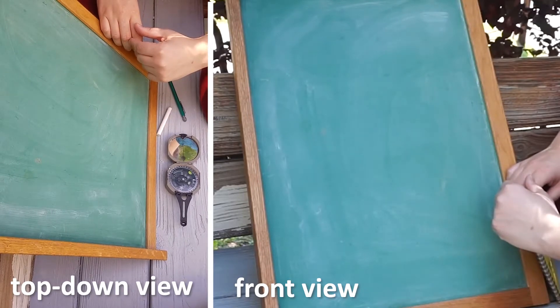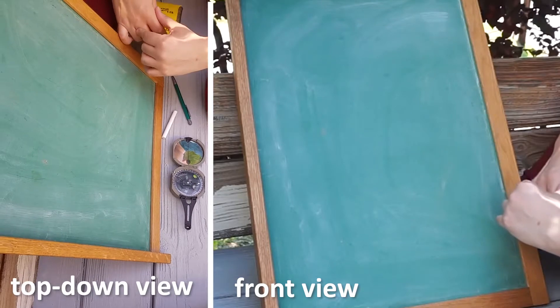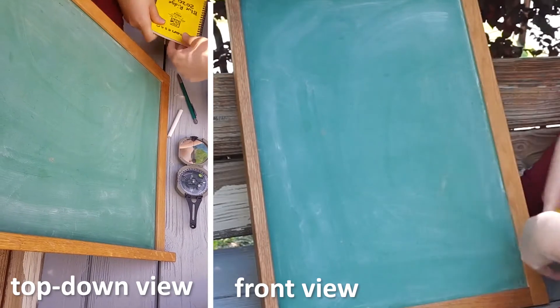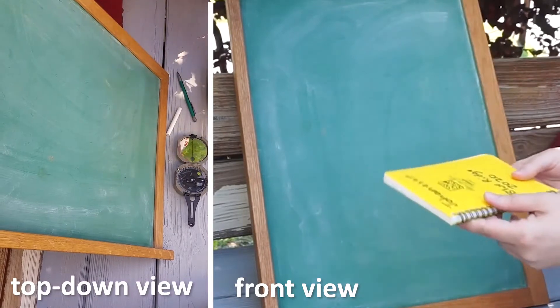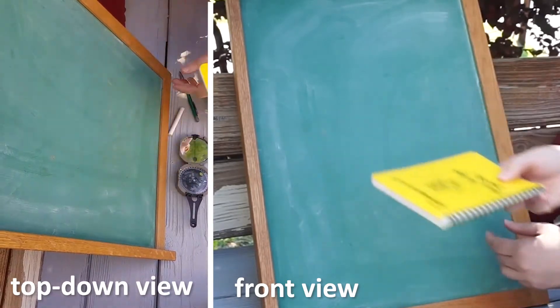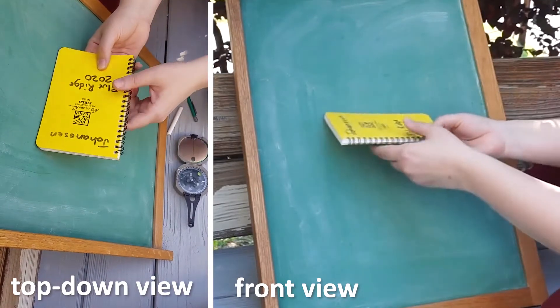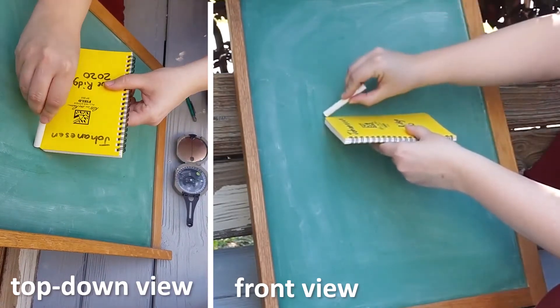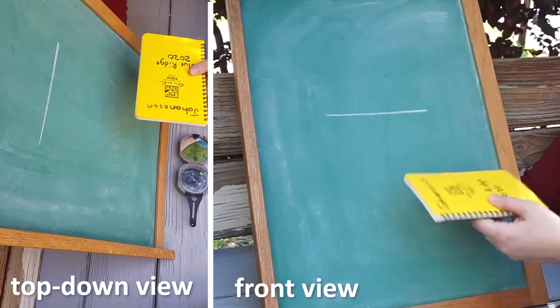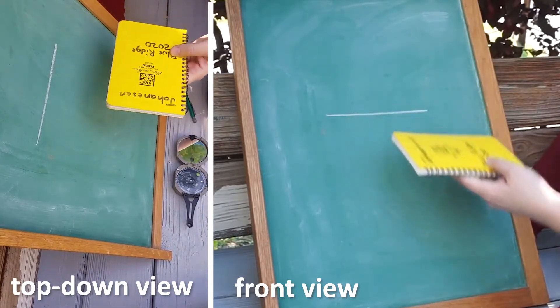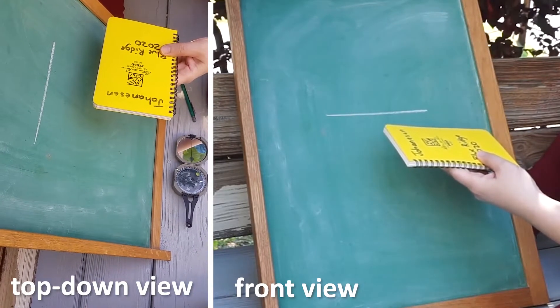The strike is the intersection of the horizontal plane with that surface. So I'm going to use this notebook as a horizontal plane. When that intersects that surface, you're going to get a line. Horizontal means parallel with the horizon - it's always going to be flat like a table or the floor or the ceiling.